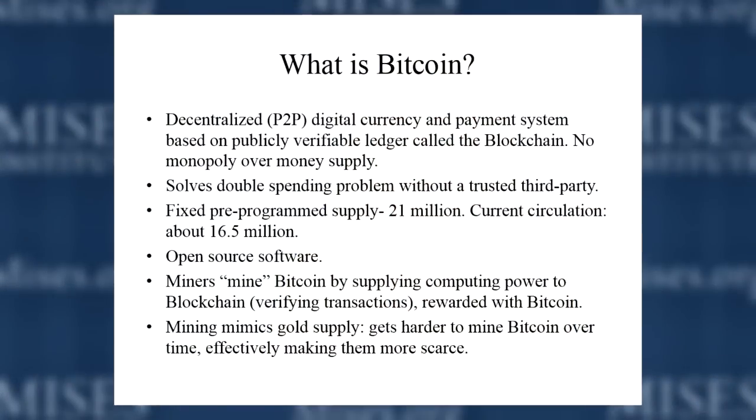What Bitcoin does is solve what's known as the double spending problem, which is a big problem with electronic data. Think about when you send an email attachment — you can send that exact same file to one person, then turn around and send it to another person for no cost. It can be perfectly duplicated. Sending value electronically has the same problem — it's very easy to copy and double spend. This is the role that commercial banks play: they act as a third party standing between people trading with each other, keeping the ledger.